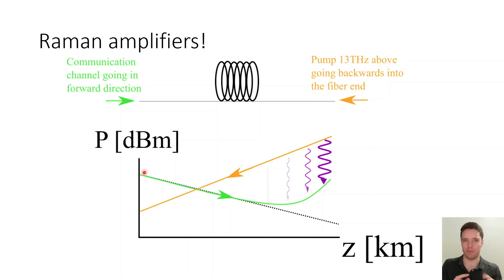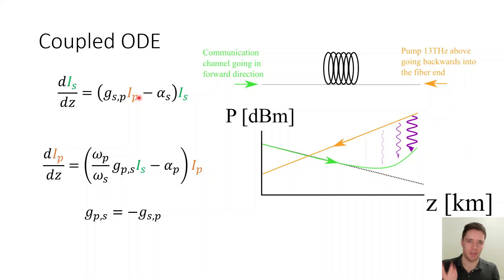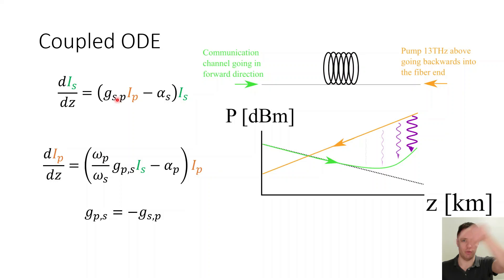That's going to be a little bit important in a moment when we have to model this numerically. To create a very crude, simple model of this, we can write down two coupled differential equations. This one is for the change in the power of the signal as we move forward — it's essentially exponential behavior, because it's the current power of the signal multiplied by a gain factor. That gain factor consists of a loss due to the attenuation of the fiber, and also the actual positive gain term due to the transfer of power from the pump into the signal, mediated by the Raman gain, which you can calculate from the spectrum curve by looking at the frequency difference between the pump and the signal.